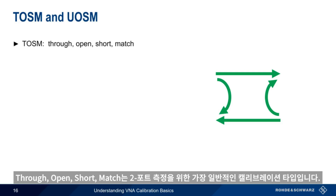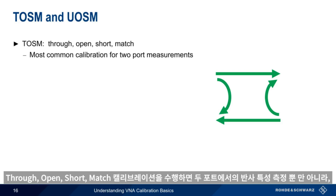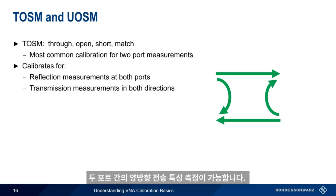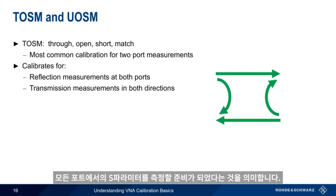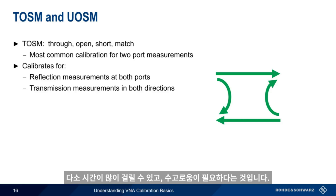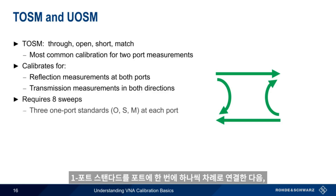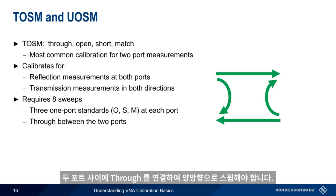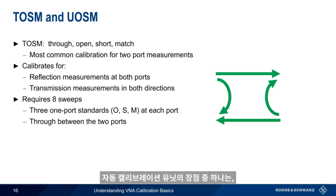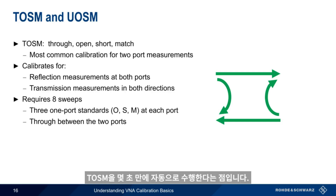Through-open-short-match is, by far, the most common calibration type for two-port measurements. Running a through-open-short-match calibration provides calibration for reflection measurements of both ports, as well as transmission measurements in either direction between these ports. So after running this calibration, we can make any S-parameter measurements. The only downside of the through-open-short-match calibration is that it can be somewhat time-consuming and labor-intensive. Eight sweeps are required. The three one-port standards have to be connected one at a time to each port, and then the through has to be connected between the two ports and swept in both directions. Part of the appeal of auto-calibration units is that the through-open-short-match can be run in just a few seconds, without having to manually connect and disconnect the calibration standards.